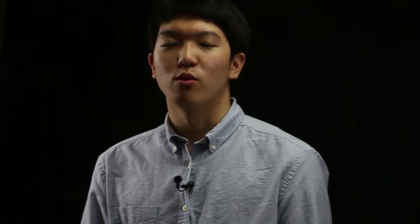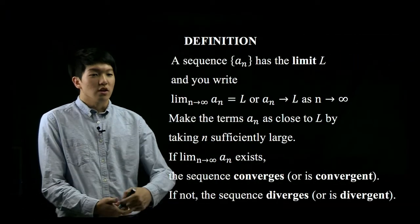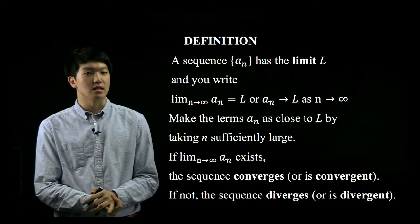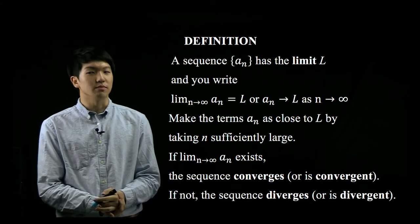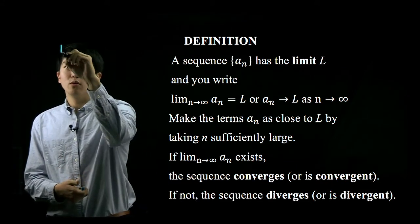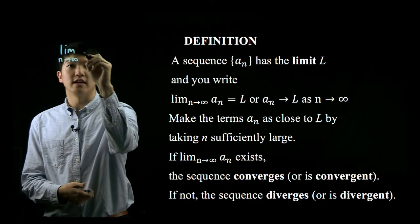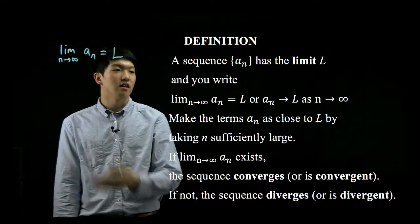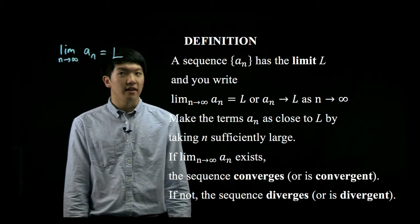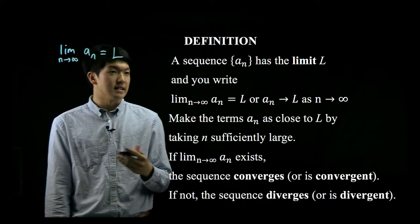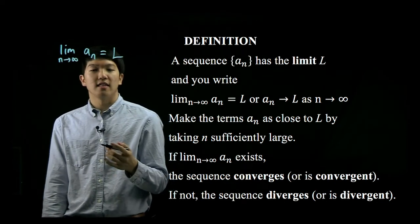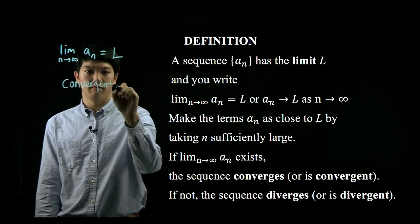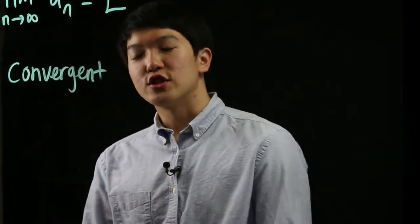So let's begin with a more complex definition. Just like functions, sequences can have limits as well, and it's illustrated in this definition. When we have limit n goes to infinity for any sequence, and that approaches L, then that L is the limit of the sequence. And in fact, if this holds true for any sequence, then we say that that sequence is convergent.